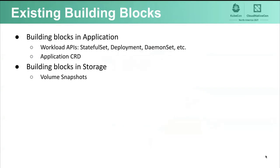To achieve all this, we need many building blocks, and some already exist in the community. For understanding what application resources need to be backed up, there are workload APIs like StatefulSets and Deployments, as well as application CRDs. For backing up and restoring volumes, volume snapshot features — already GA — can be used. However, we are still missing many building blocks, which we'll cover next.